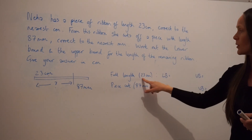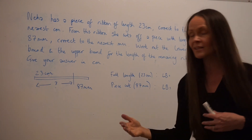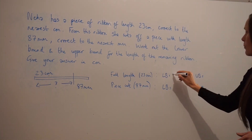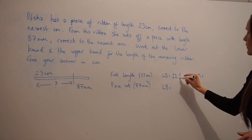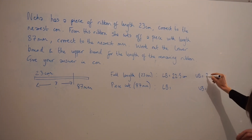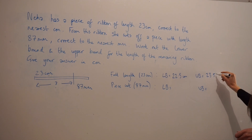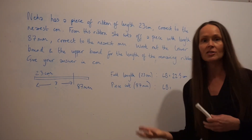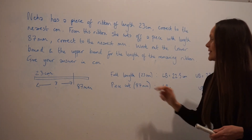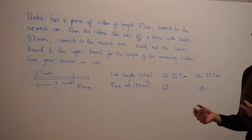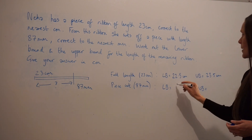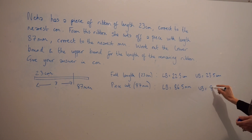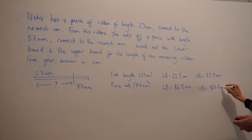Because we're working out both lower and upper bounds in this question, it's a good idea to start by working out the upper and lower bounds for the full length of ribbon and also the piece that she's cutting off — 87 millimetres. So the full length is 23 centimetres measured to the nearest centimetre. The lower bound would be 22.5 centimetres and the upper bound would be 23.5 centimetres. Next, looking at the piece she's cutting off — 87 millimetres rounded to the nearest millimetre — the lower bound would be 86.5 millimetres and the upper bound 87.5 millimetres.